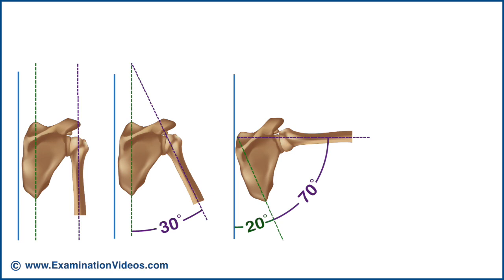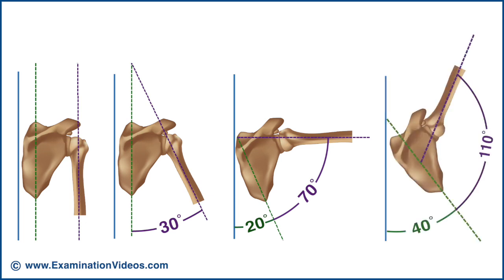On average, there is approximately 2 degrees of glenohumeral movement for every 1 degree of scapulothoracic movement from this point. As the upper extremity moves through abduction to 90 degrees, the glenohumeral joint contributes 40 degrees for a total of 70, while the scapulothoracic joint has only contributed 20. This ratio continues above 90 degrees so that by the time the arm has been raised to 150 degrees, the contributions would be 110 for the glenohumeral and 40 for the scapulothoracic. The actual ratio can vary during different positions of the arc of elevation and can differ from individual to individual.